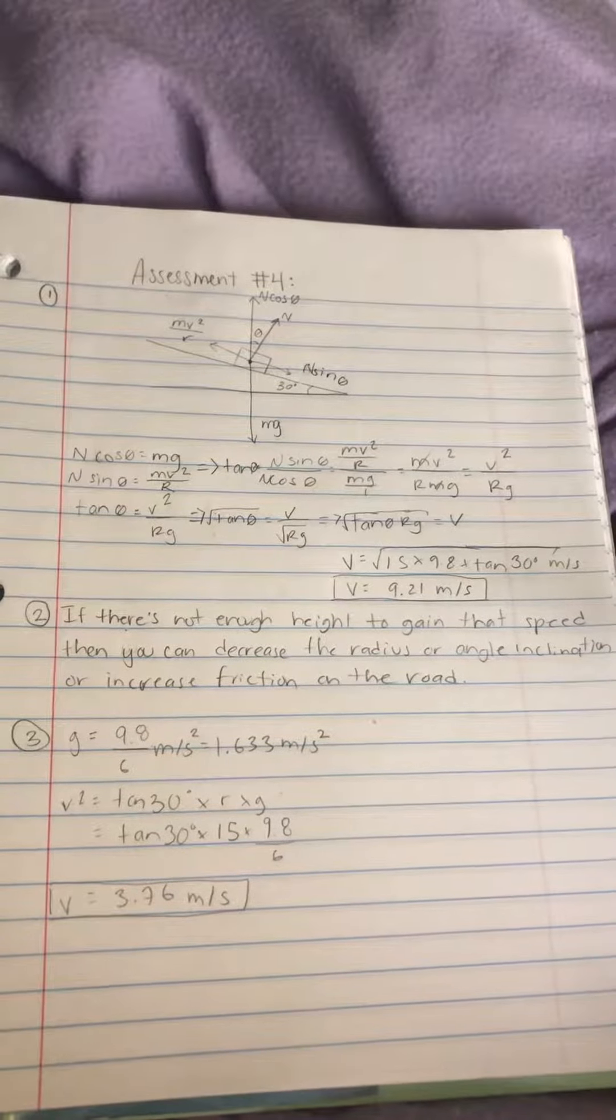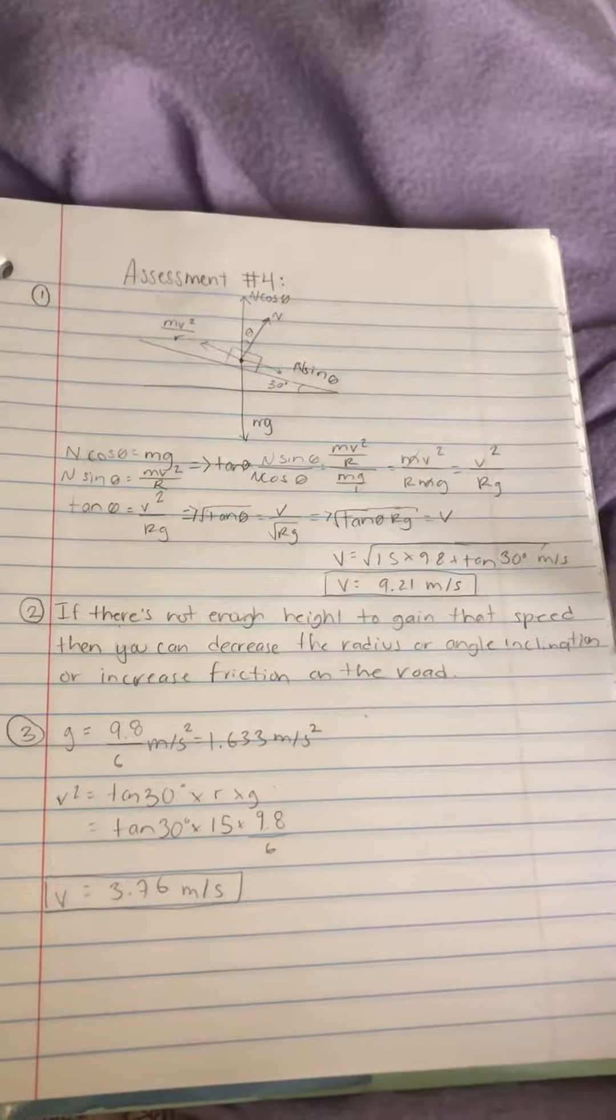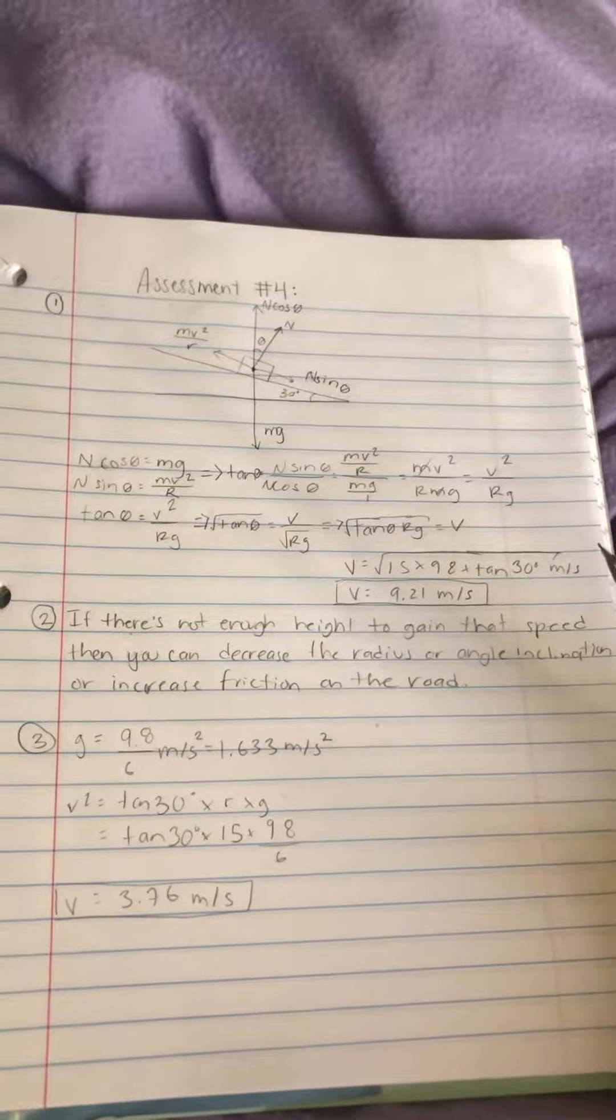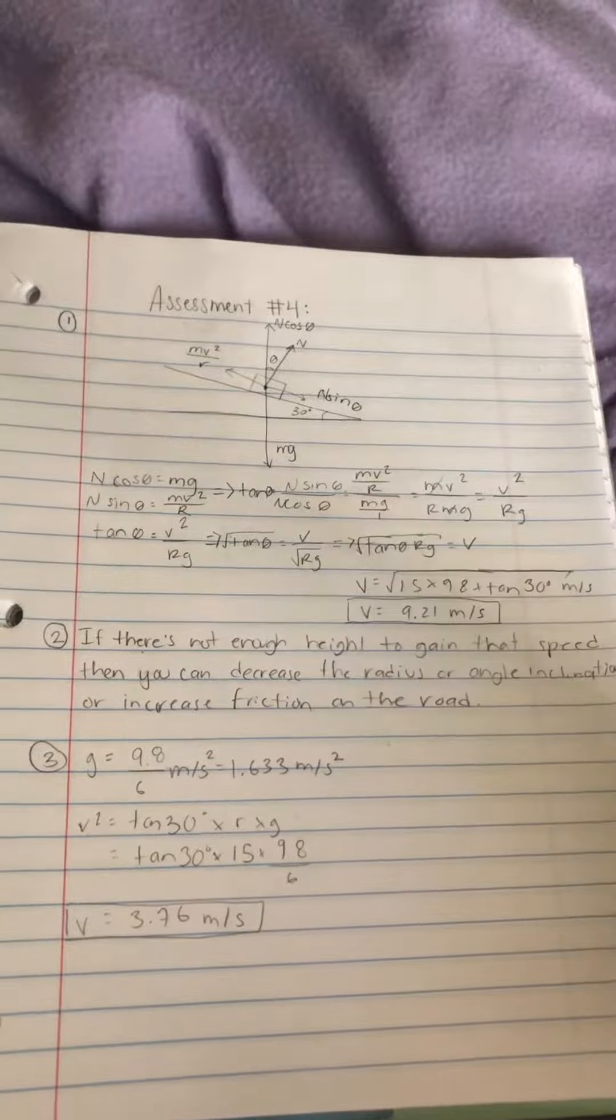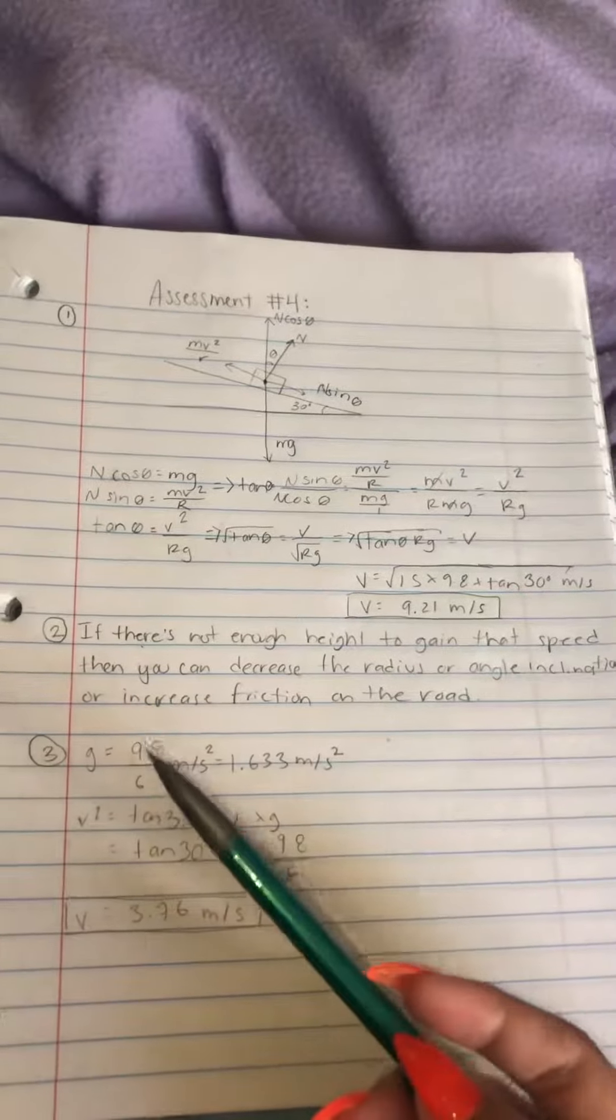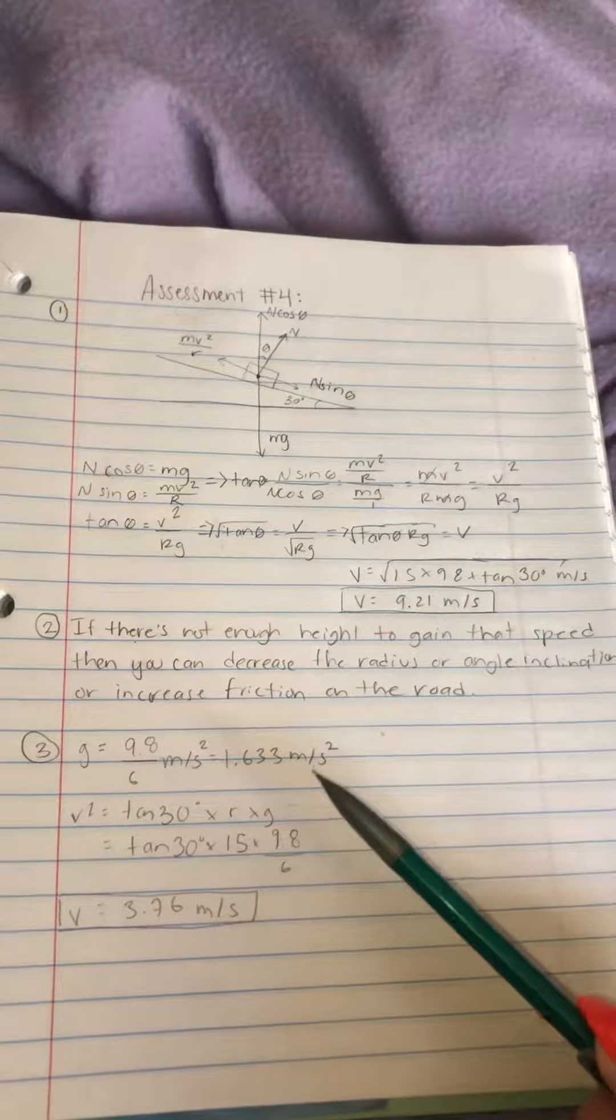The third question is asking for the minimum speed you need if you were on the moon. Now, it's the same process, except for gravity because when you're on the moon, the gravity is less by 6 times. So you just divide the gravity, 9.8 divided by 6, and you get 1.633.